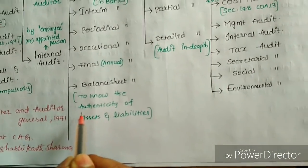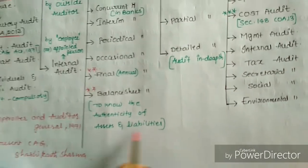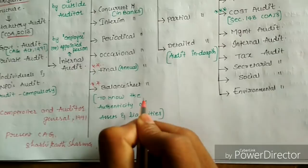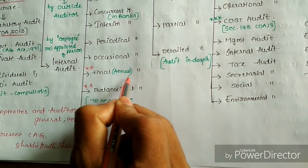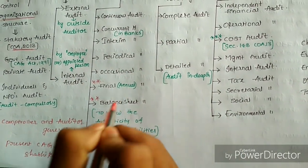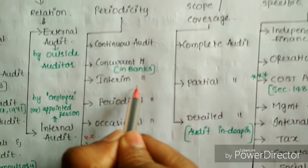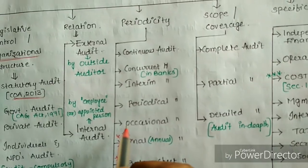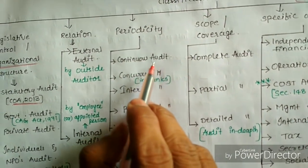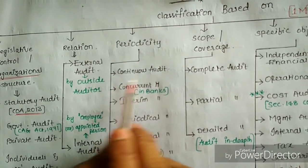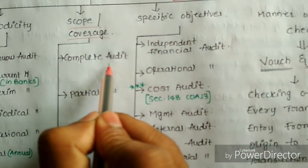Based on periodicity: continuous audit, concurrent audit, interim audit, periodical audit, and final audit — also called balance sheet audit. Balance sheet audit is important for knowing the authenticity of assets and liabilities. Annual audit is done by every company to know the financial results. Concurrent audit is mainly done in banks. Interim audit means any audit between two AGMs. Continuous audit is done throughout the year.